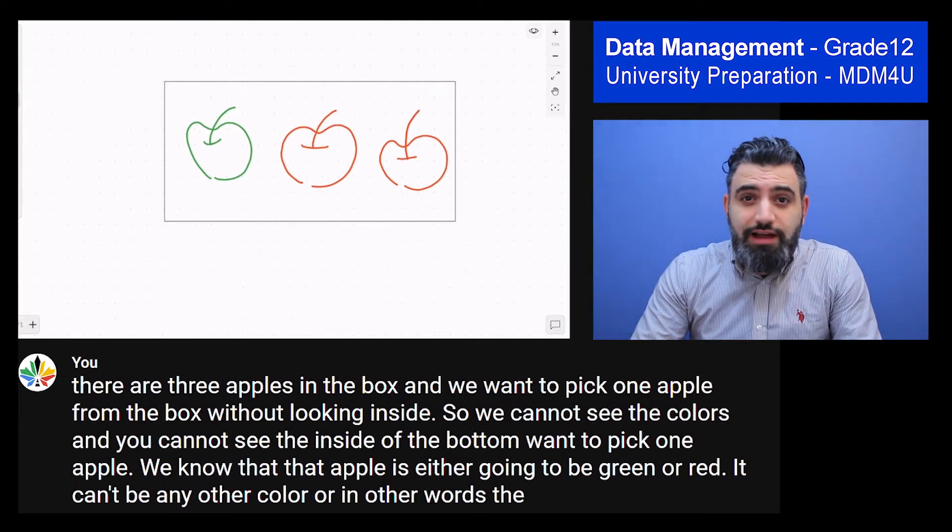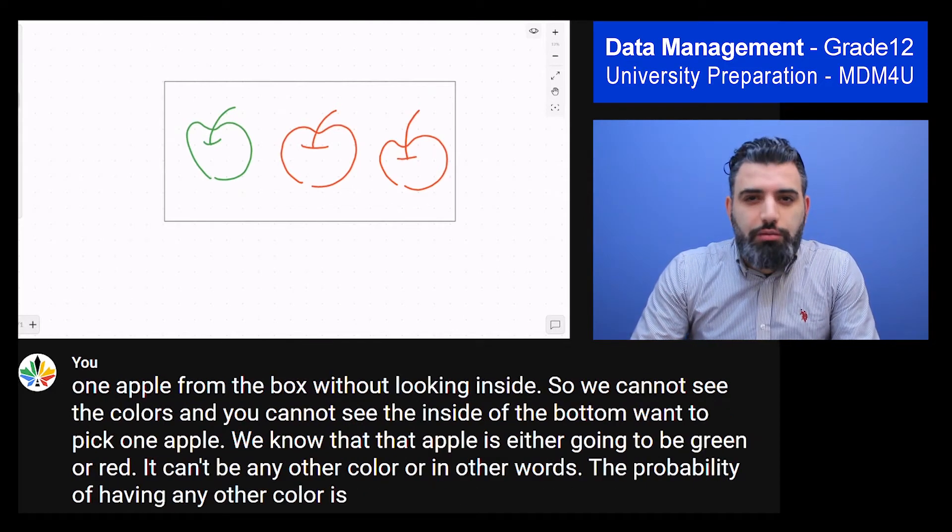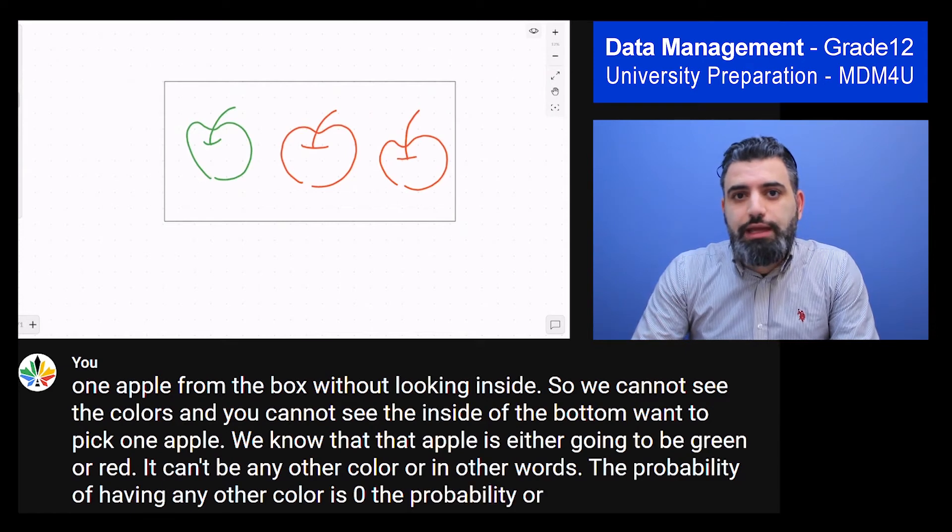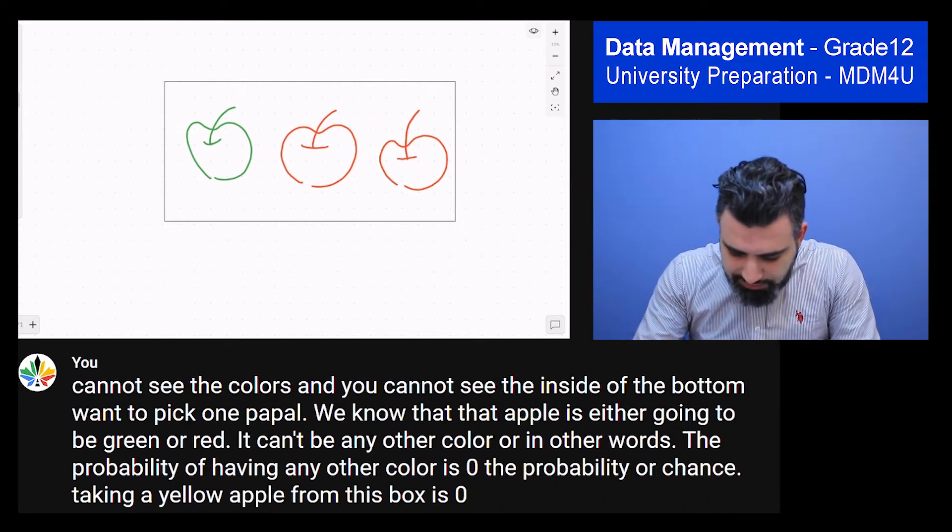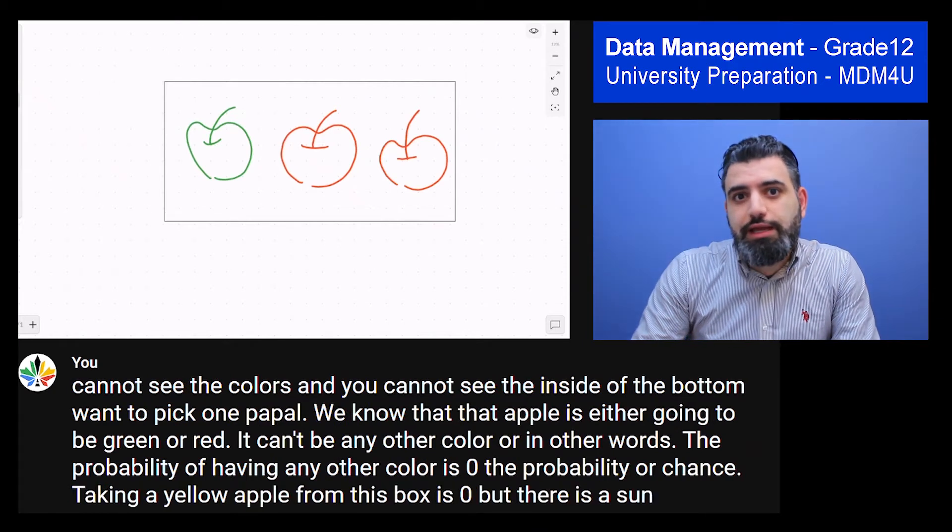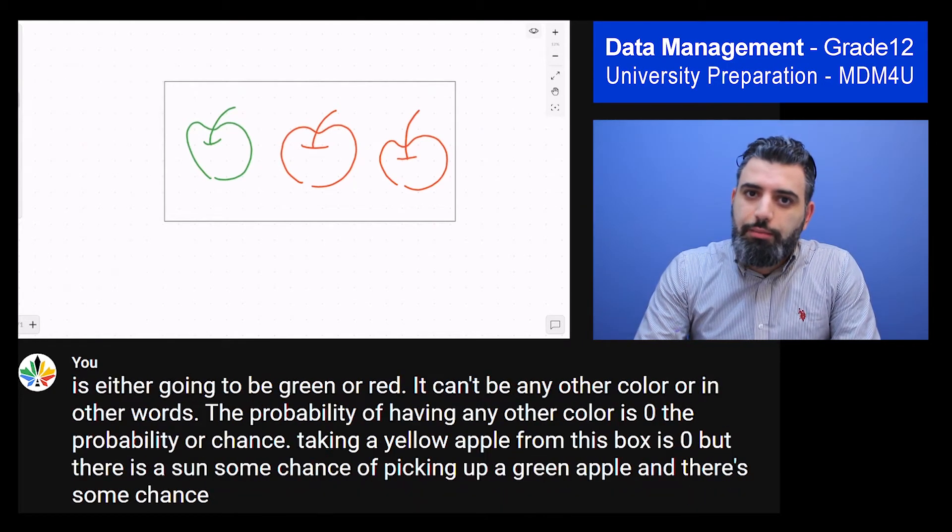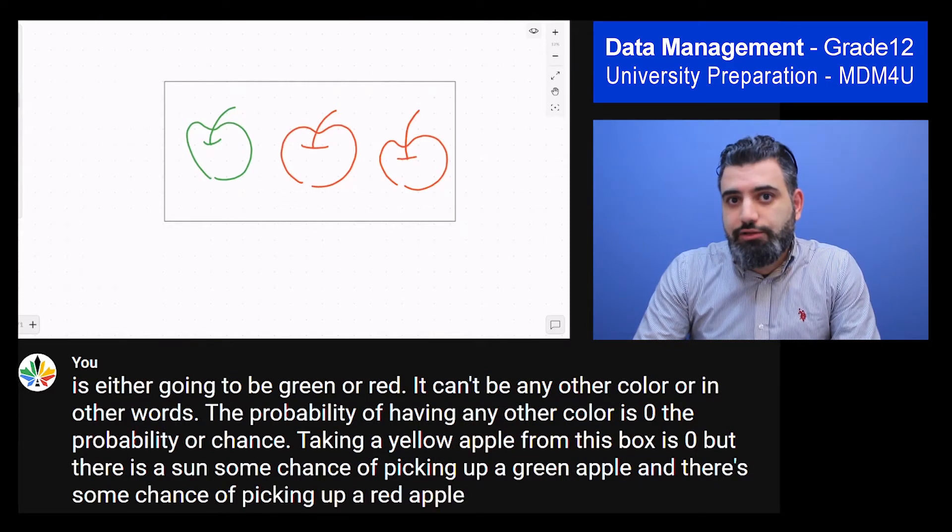Or in other words, the probability of having any other color is zero. The probability or chance of picking a yellow apple from this box is zero. But there is some chance of picking up a green apple and there's some chance of picking up a red apple. And let's calculate that together.